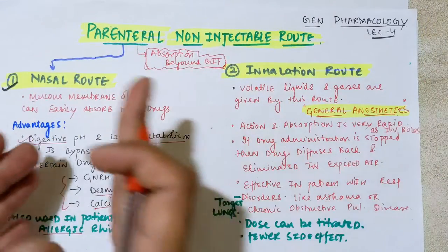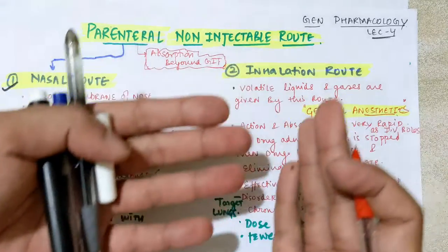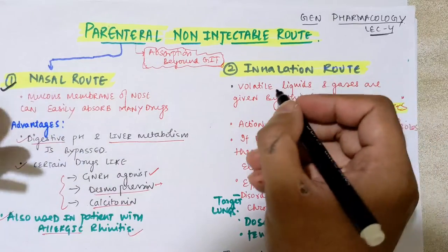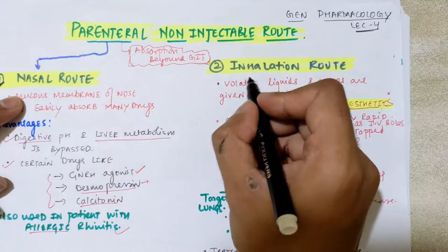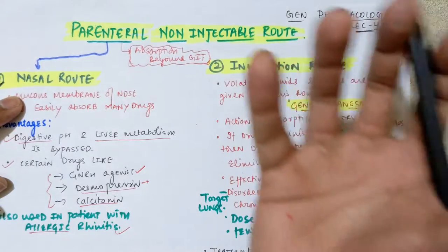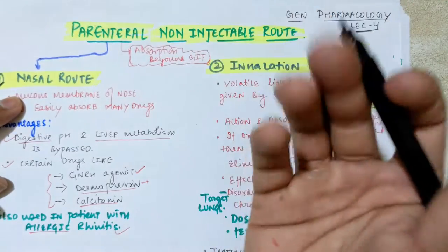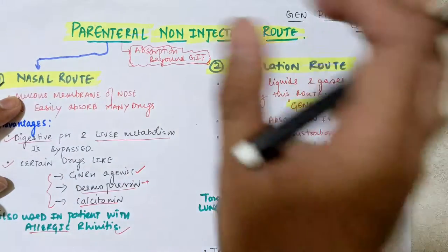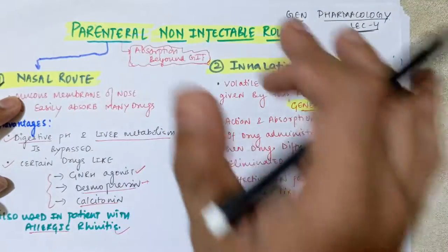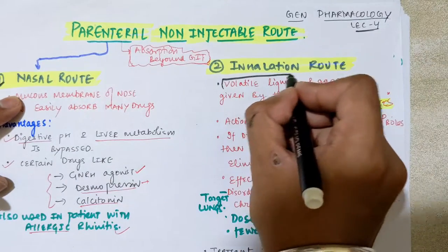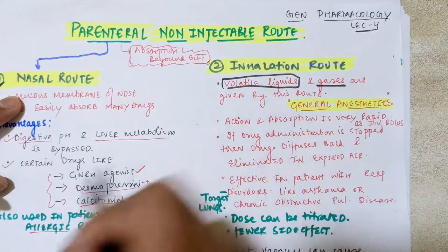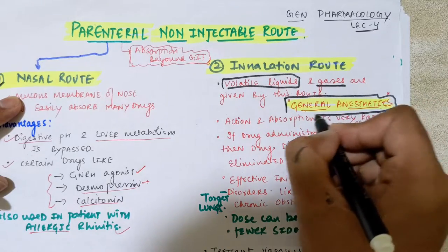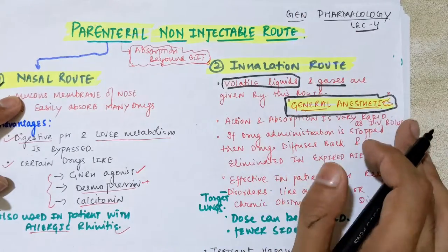Now let's move on to the inhalation route. Some specific drugs are given through this route. By the name, it is clear that you will inhale the drugs. The drugs can be in liquid form or gas form — similar to how you inhale oxygen and exhale carbon dioxide. So the drug can be in volatile liquid form or gas form.